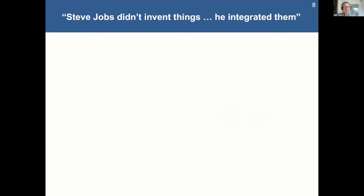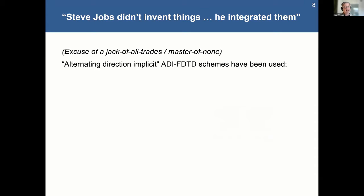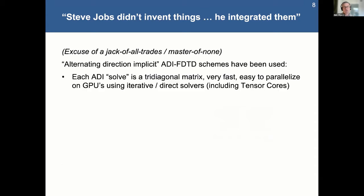So I'm really, I try to invent things, but honestly, I'm much better integrating them. So just accepting that is probably a good acknowledgment that I'm a master of none, but I do try to be a jack of all trades. So this ADI scheme, they've been used for a long time in these finite difference time domain electromagnetics problems. And just to explain that these ADI solves are tridiagonal. And as I mentioned, you can use iterative and direct solvers on them.